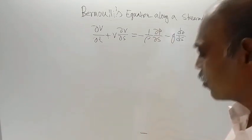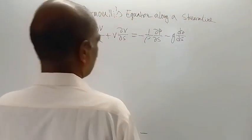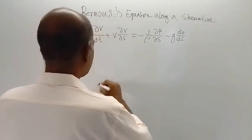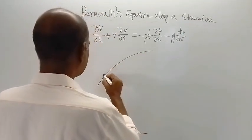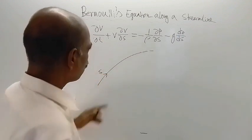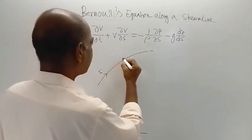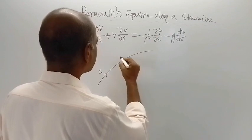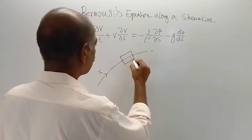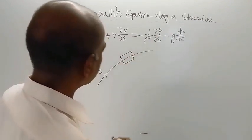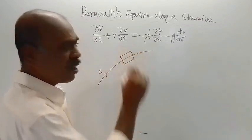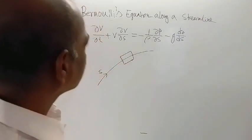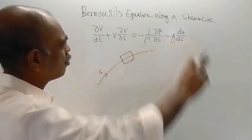This was the equation, and the fluid element which was taken was like this — this is the streamline. A cylindrical fluid element was taken for consideration for the derivation of this equation.